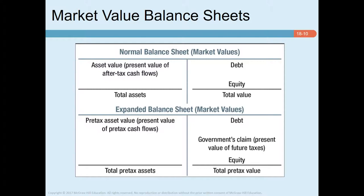MM's Proposition I states that the value of a pie does not depend on how it is sliced. Last week we learned that the value of a firm is unaffected by how capital is allocated between debt and equity. MM Proposition I says the size of each slice — debt versus equity — doesn't impact firm value. Holding total assets constant, a dollar more of debt means a dollar less of equity, and the firm's value remains the same.